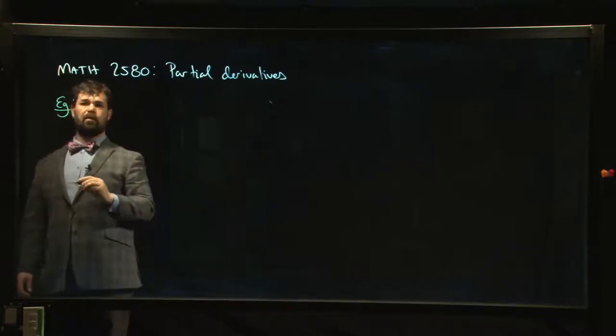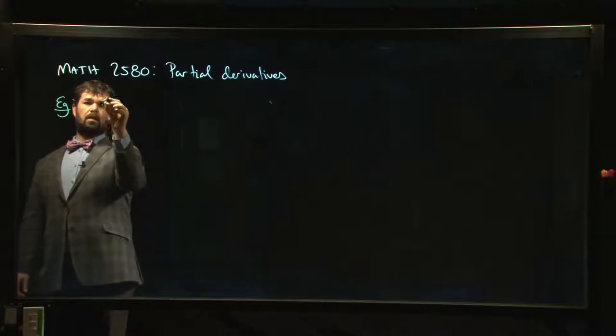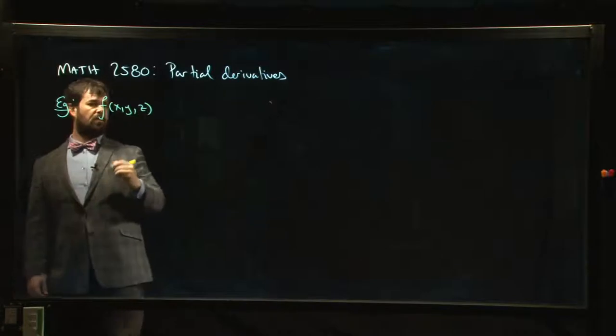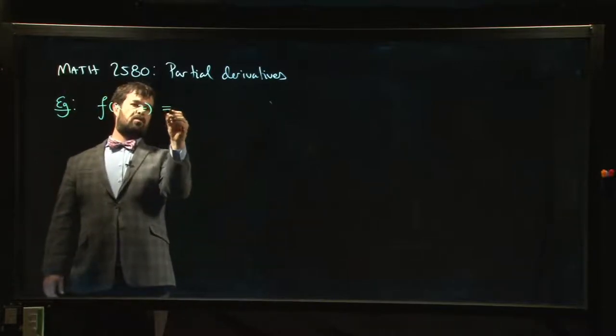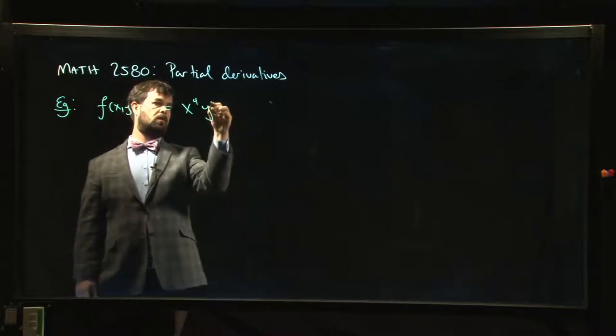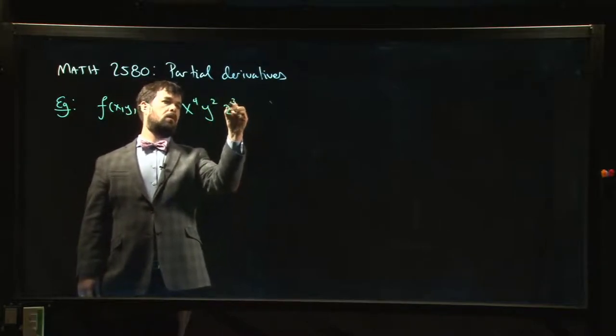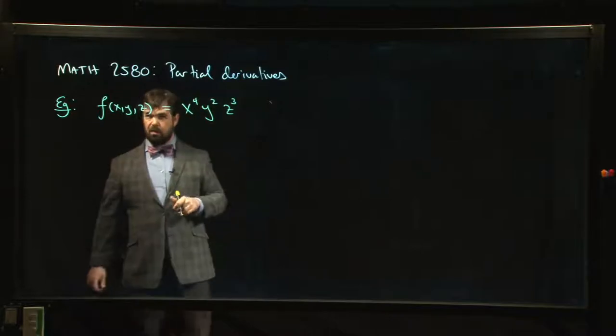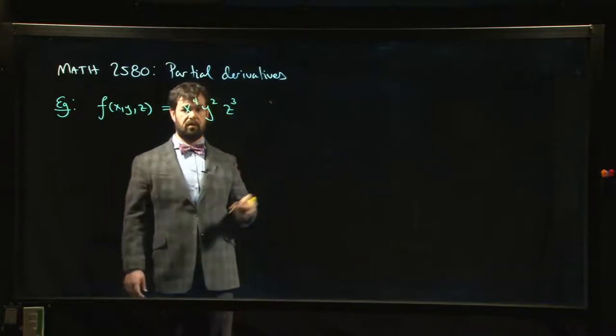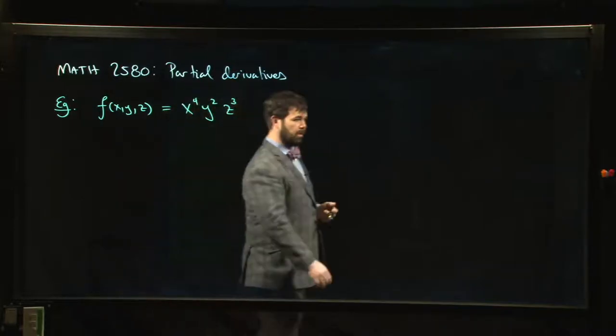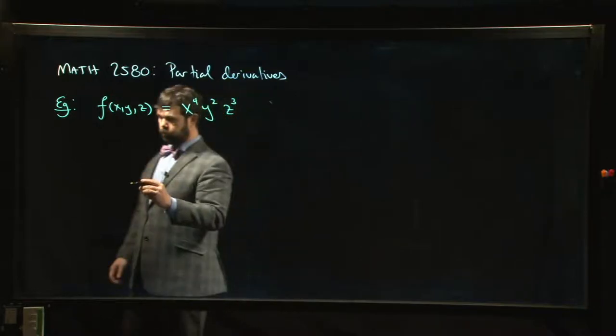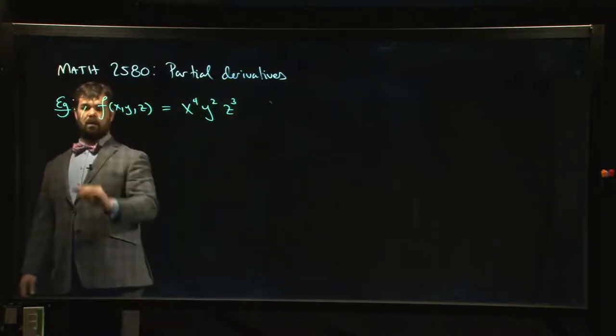Okay, so here are a few functions we might look at. So this one's a function of three variables, but it's a relatively tame function. In fact, it'll be polynomial. All right, in more than one variable, polynomials can involve products of powers of all of your variables. So this is actually a monomial - it's a polynomial with one term.